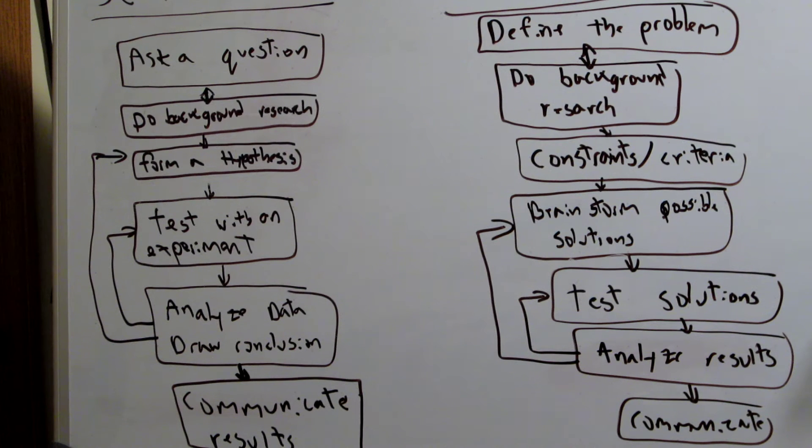What is different here is the next step, the criteria and constraints, just right underneath the background research. This is where you narrow your field for the problem. So here it's like your costs and benefits: cost, time, materials that you have, a bunch of different stuff that can narrow your focus on the solution at hand.